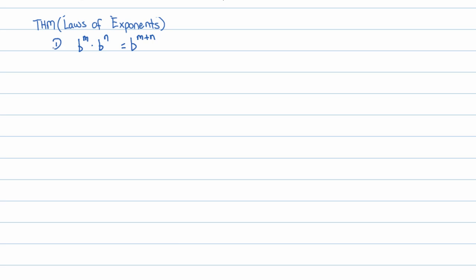Our second law of exponents is if you have b to the m over b to the n, it is equal to b to the m minus n. A little note on this one: we have to mention that b cannot be zero because otherwise we would be dividing by zero.